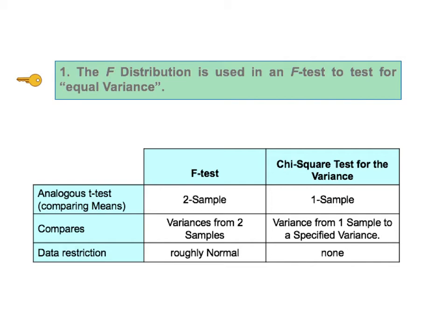Now let's look at the rightmost column titled chi-square test for the variance. Another type of t-test, the one-sample t-test, compares a mean from one sample with a specified mean. The specified mean could be a target mean or a historical average or anything else we choose.